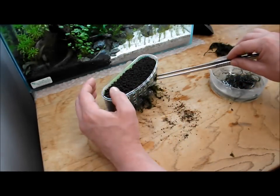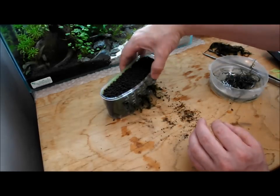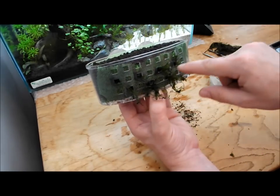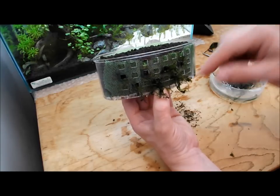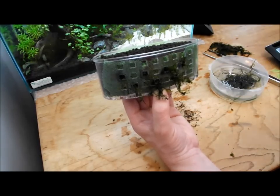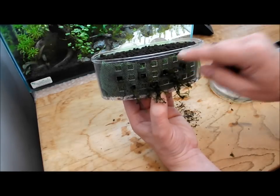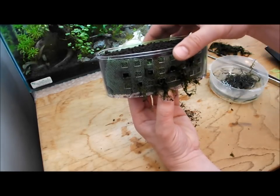There you go, like so. So that's just some moss pushed into the front. I haven't pushed it right the way through the netting. This is just on the inside of the plastic. Let's say before it penetrates the netting.